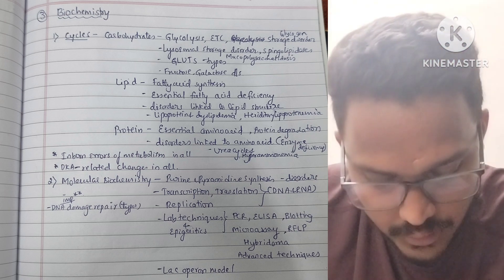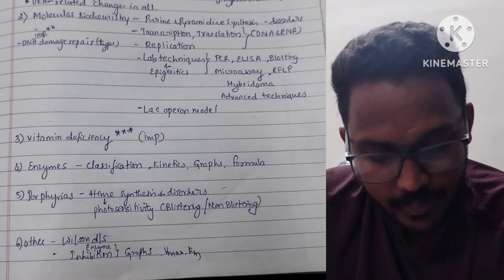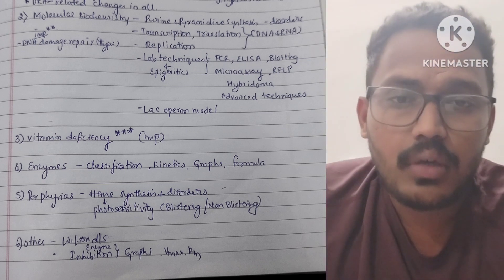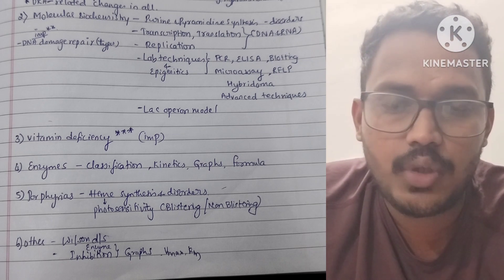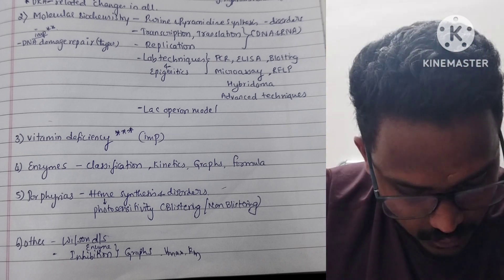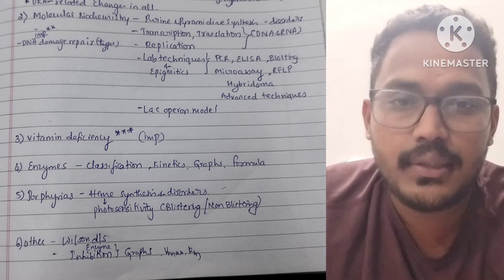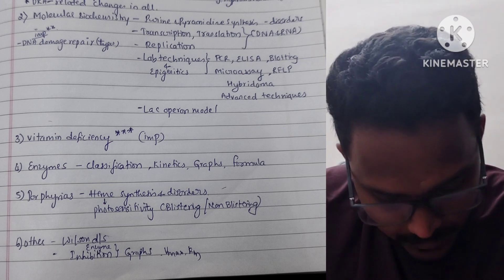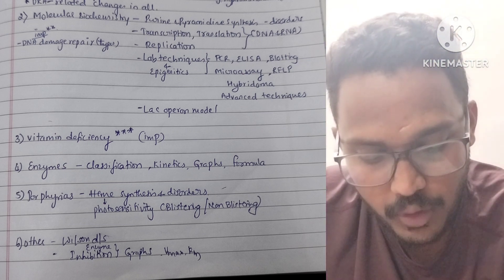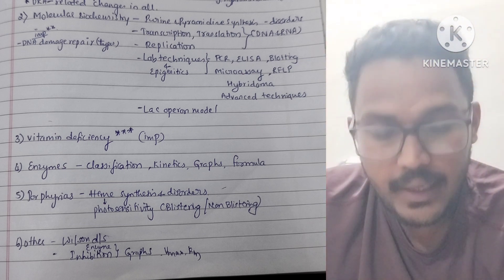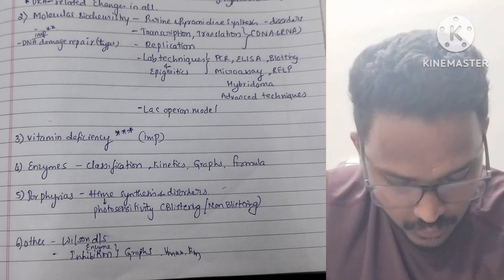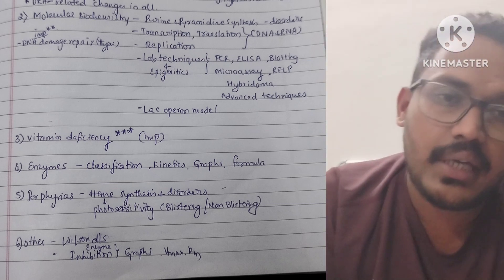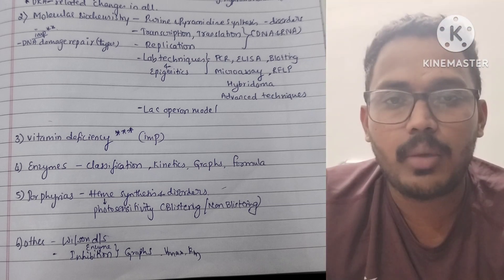DNA damage repair questions are asked every alternate year. Vitamin deficiency is very important. Enzyme classification, kinetics, graphs, and formulas are important. In porphyria: heme synthesis, its disorders, and photosensitivity related to heme synthesis are very important. Inborn errors of metabolism across all sections are important. Wilson's disease and enzyme inhibition — including graphs, Vmax, and Km — are important in biochemistry.